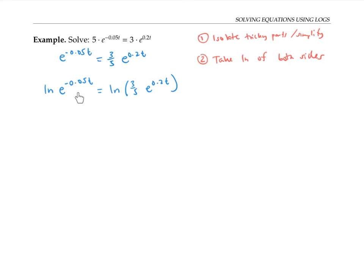Now on the left side, I can immediately use my log rule to bring down my exponent and get -0.05t·ln(e). But on the right side, I can't bring down the exponent yet because this e^(0.2t) is multiplied by 3/5. So before I can bring down the exponent, I need to split up this product using the product rule.